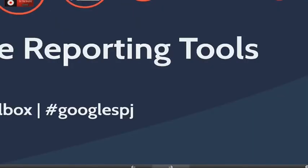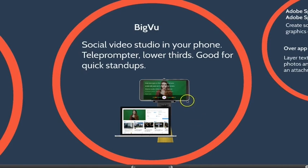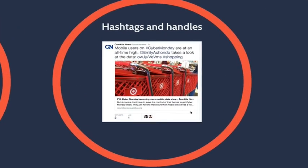Big View is a fun one — it's a little social video studio with a teleprompter built in. You can load a script into it, mount your phone on a tripod, and record yourself doing a stand-up anywhere — in the field, or in front of a green screen as shown here. Just make sure you mic yourself up, because the phone's built-in mic doesn't do a great job of picking up audio. And just a reminder to put hashtags and handles on your posts.